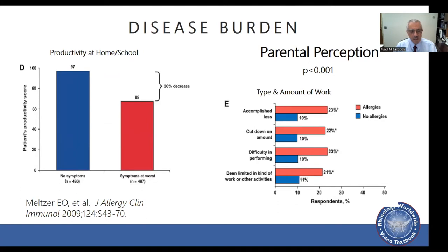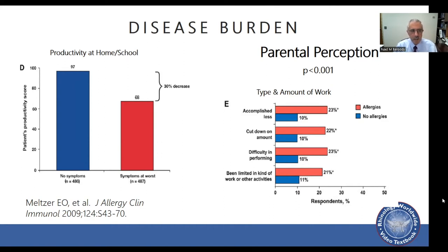The Pediatric Allergies in America survey by Eli Meltzer surveyed parents of patients with allergies or controls. Patients with no symptoms had very high productivity at 97 percent, while patients with symptoms at their worst had productivity reduced by about 30 percent. Parental perception data consistently showed that more allergic kids than non-allergic kids had problems with accomplishing tasks, cutting down activities, and difficulty performing different tasks — suggesting a significant negative impact on productivity and quality of life.